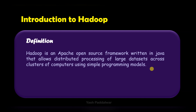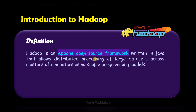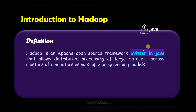The first part says that Hadoop is an Apache open source framework, which means it can be used by anyone as it is free to use and also it is founded by Apache. Note that Hadoop is a framework. Coming to the next part, it is written in Java — the entire source code which supports different functionalities inside it is entirely written in Java language.